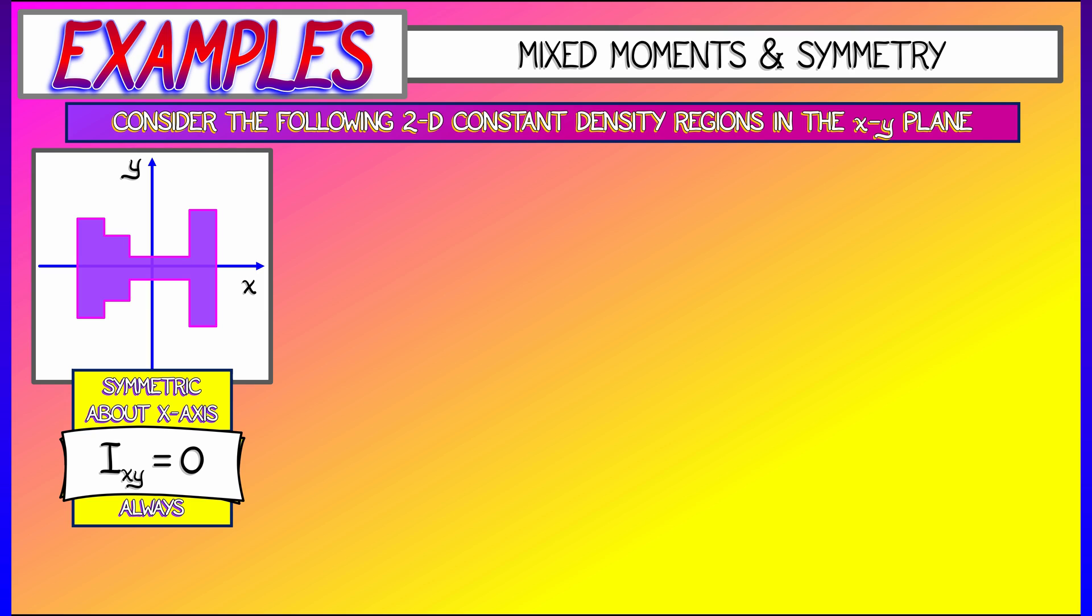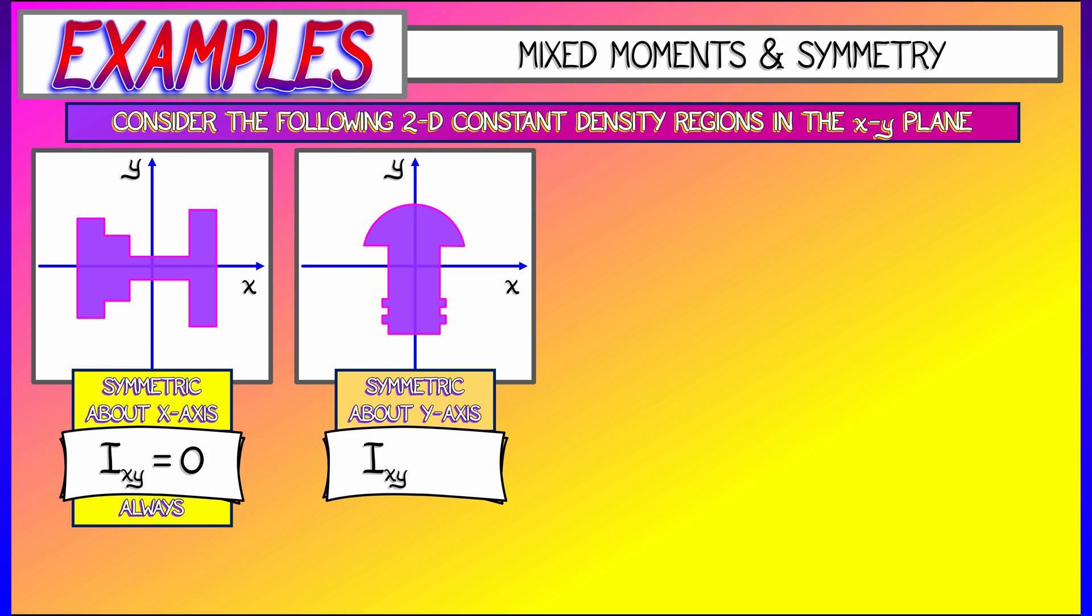And the same thing is true if I have a domain that is symmetric about the y-axis as well. Whenever you've got this sort of symmetry about an axis, the mixed moment of inertia is always going to vanish.